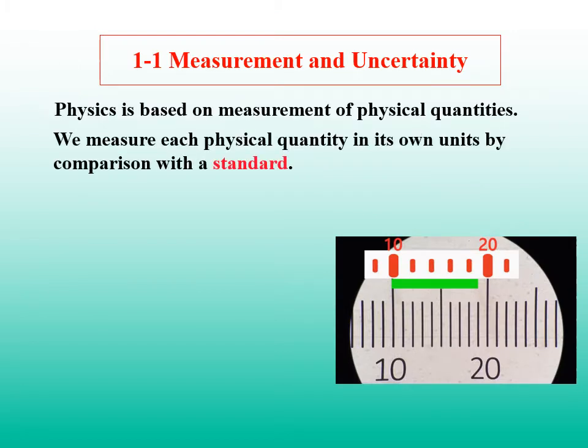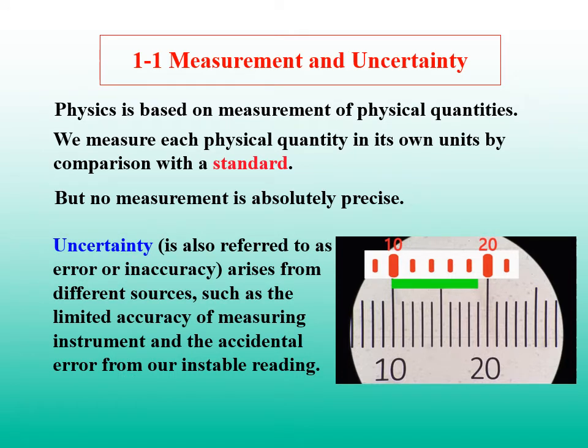To understand the world around us, we need to find the relationships among physical quantities that can be measured. But no measurement is absolutely precise. There is an uncertainty associated with every single measurement. Uncertainty arises from different sources. Among the most important are the limited accuracy of every measuring instrument, and the inability to read an instrument beyond some fraction of the smallest division.